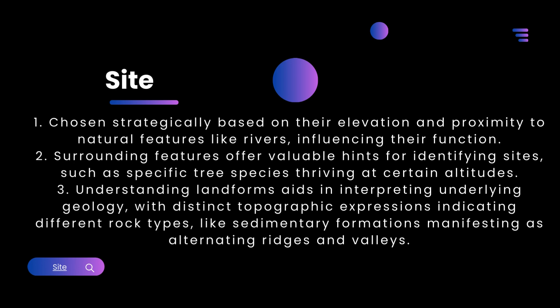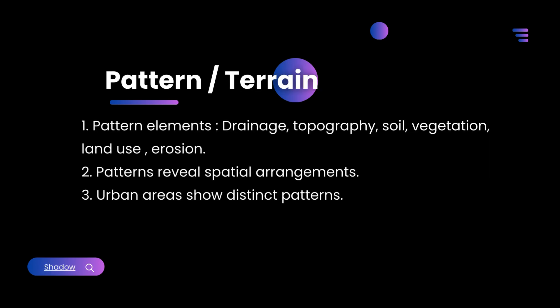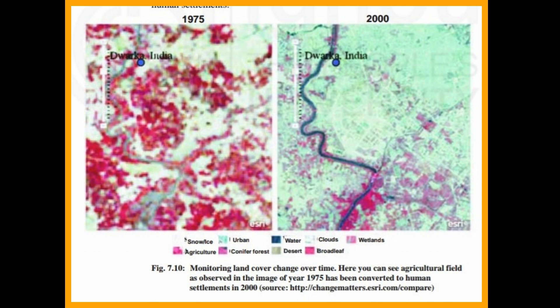Pattern elements include drainage, topography, soil, vegetation, land use, and erosion. Patterns reveal spatial arrangements. Urban areas show distinct patterns.